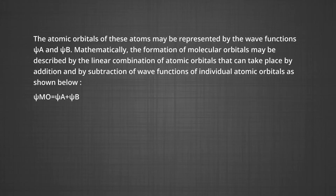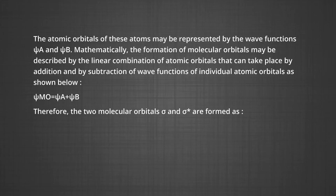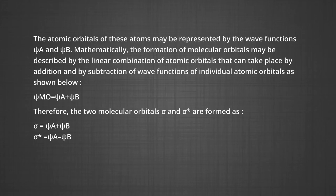As shown below, ψ(MO) = ψ_A + ψ_B, where ψ_A and ψ_B are atomic orbitals of atoms A and B respectively. Therefore, the two molecular orbitals σ (sigma) and σ* (sigma anti-bonding) are formed as: σ = ψ_A + ψ_B. Bonding orbitals are formed by constructive overlap. σ* = ψ_A − ψ_B. Anti-bonding orbitals are formed by destructive overlap between atomic orbitals.